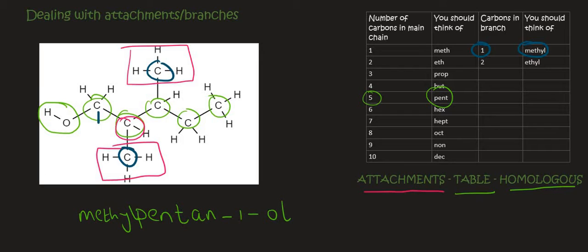And then on which carbons did we have that? Well, that was on two and three. So we say two comma three. And then we must just say di because there's two of them. So dimethyl pentan one ol.